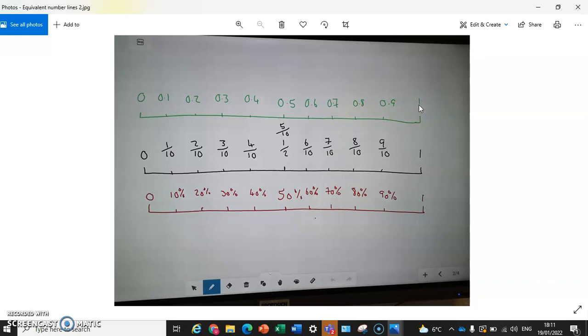So again, look at the similarity between the decimal number line and the percentage number line. 90%, for example, 0.9. 0.8 is 80%, 0.7 is 70%. So you see that same relationship again.